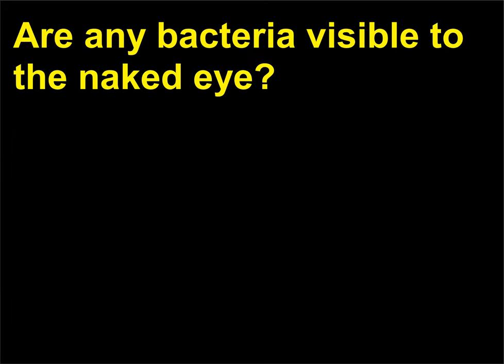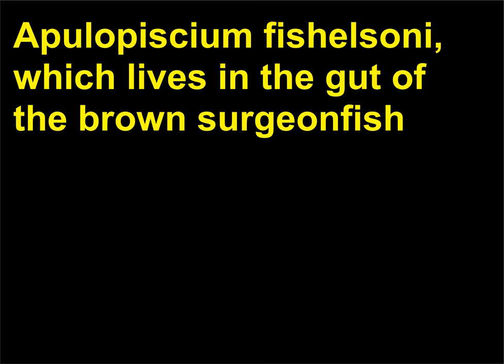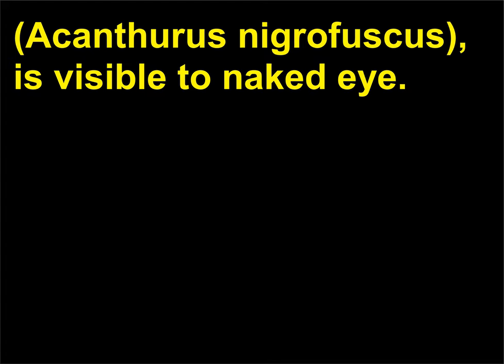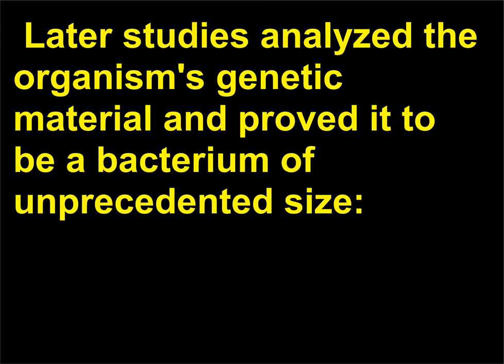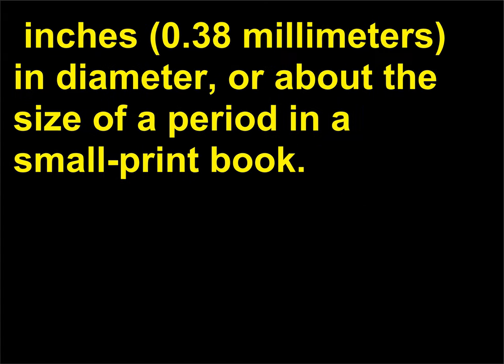Are any bacteria visible to the naked eye? Epulopiscium fishelsoni, which lives in the gut of the brown surgeonfish, Acanthurus nigrofuscus, is visible to the naked eye. It was first identified in 1985 and mistakenly classified as a protozoan. Later studies analyzed the organism's genetic material and proved it to be a bacterium of unprecedented size — 0.38 millimeters in diameter, or about the size of a period in a small-print book.